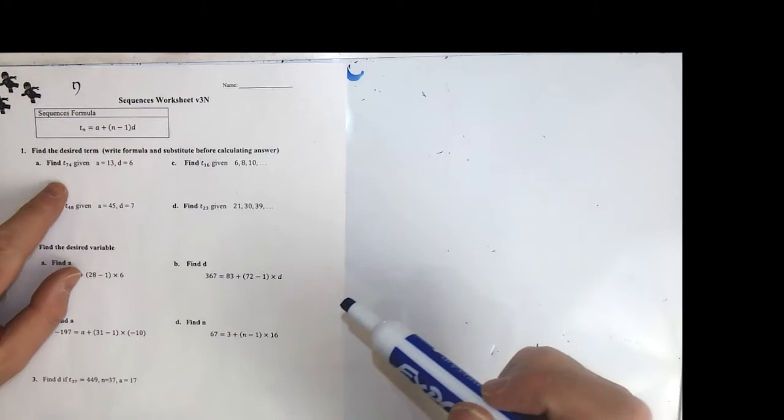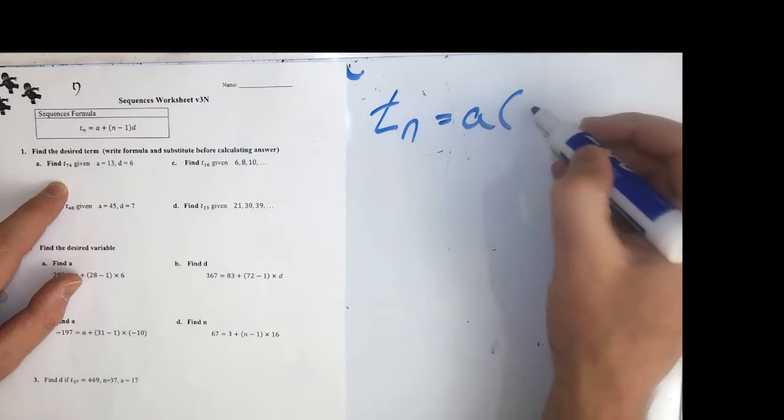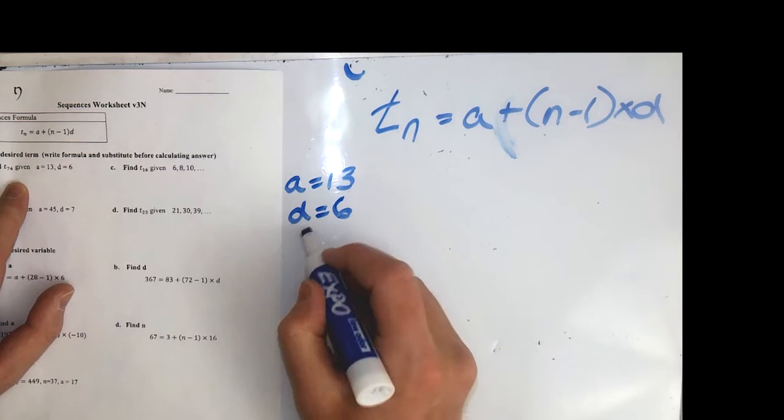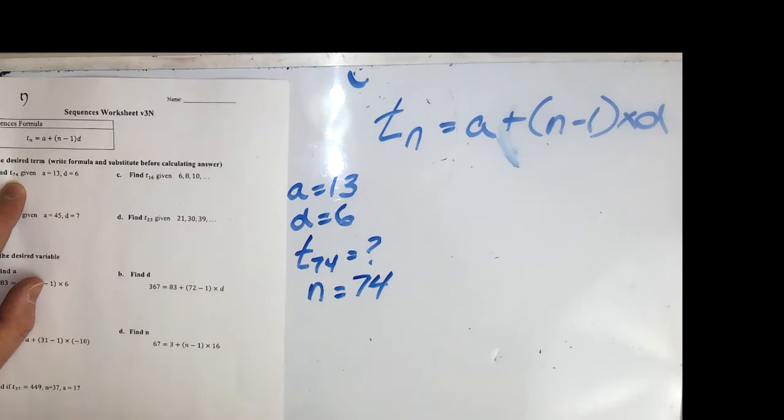We're going to start with this worksheet and figure out the first question. We're asked to find T74, and we're given A equals 13 and D equals 6. We're going to use the same formula for the whole sheet. We have A and D. The hardest one to find is N, but N is attached to the T. So we're looking for T74, and N is 74.